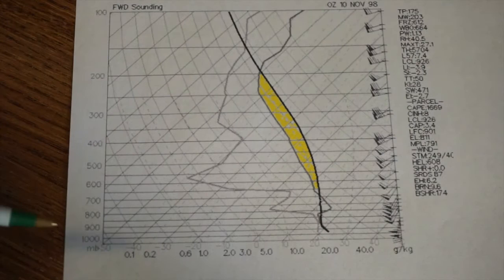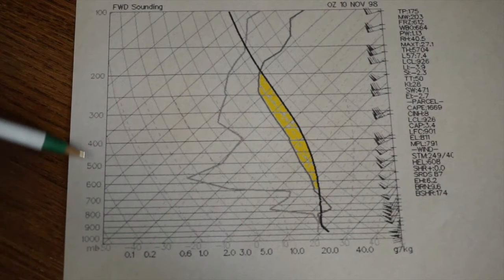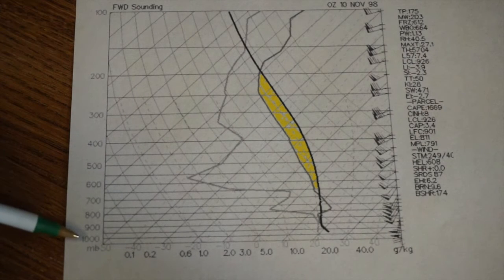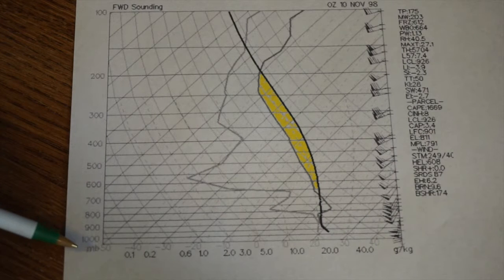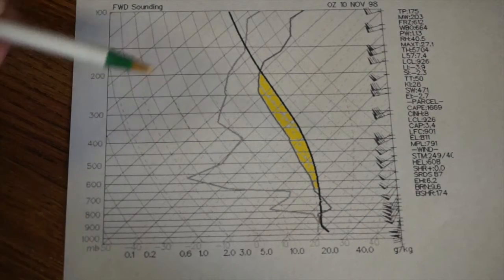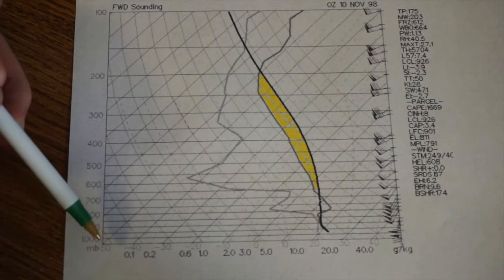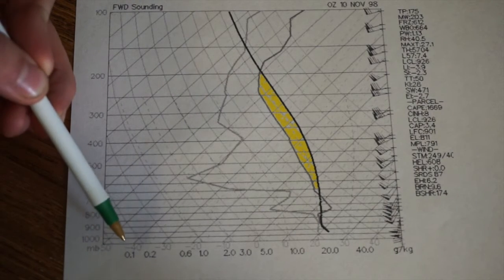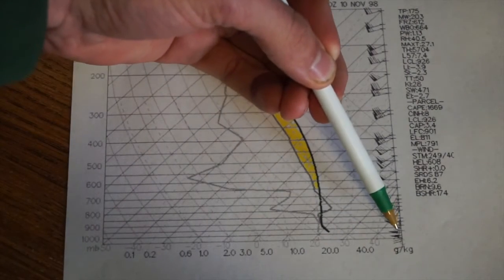On the skew-T chart, if you don't understand, this is your millibars from 1,000 millibars at surface elevation up to 100 millibars, which is about 50,000 feet. Here on the bottom, which is hard to read, we have negative 50, negative 40, up to 40 and 50 in Celsius.